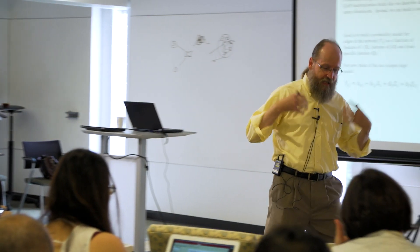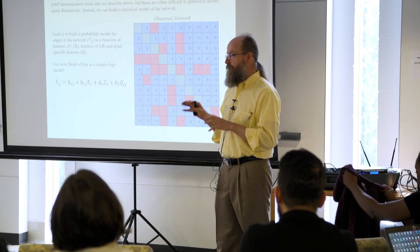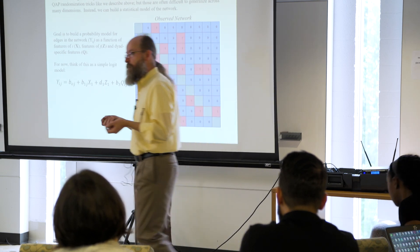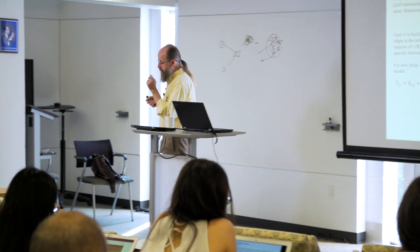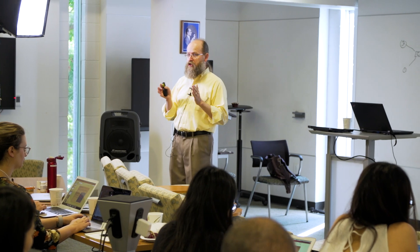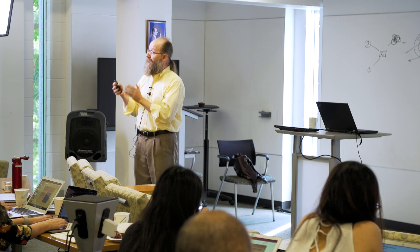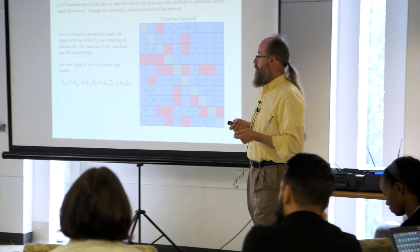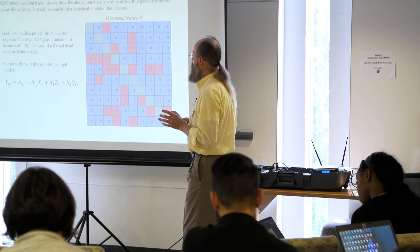Now shifting back — with this idea of permutation and modeling in mind — to thinking about modeling a network as a dependent variable. The way we model it is by mixing the log-linear notion with something like a permutation test, in this case an MCMC chain, where we simulate things many times to get the underlying answer. But we'll start first with just the conceptual idea.